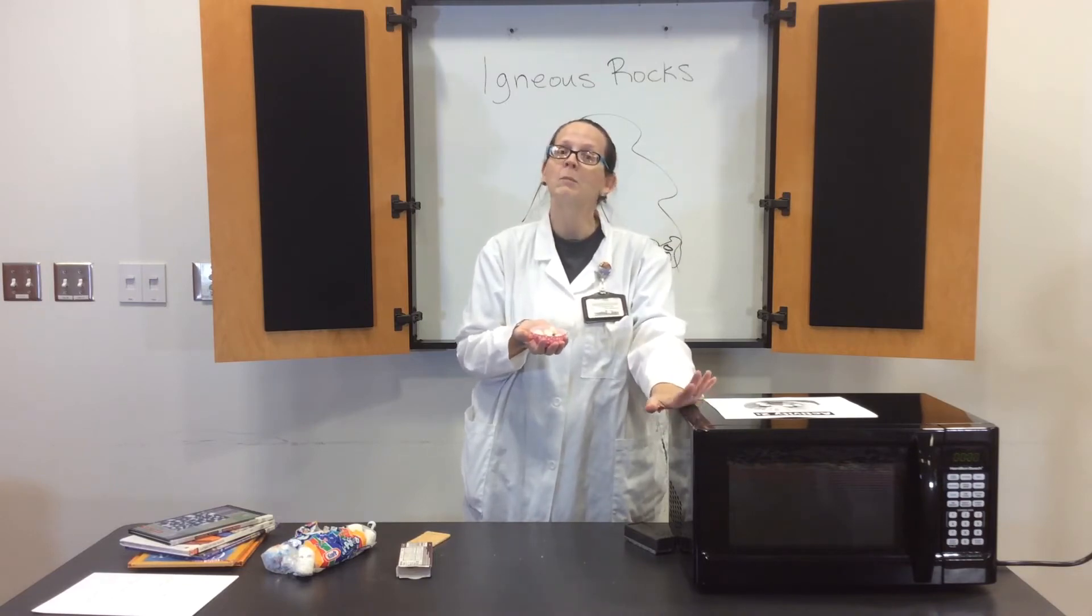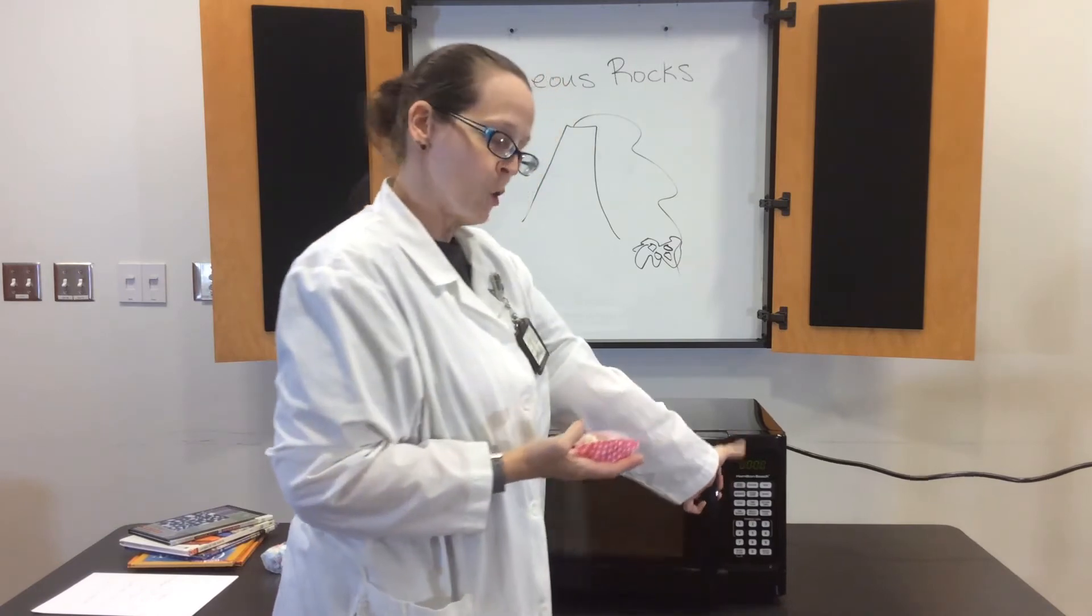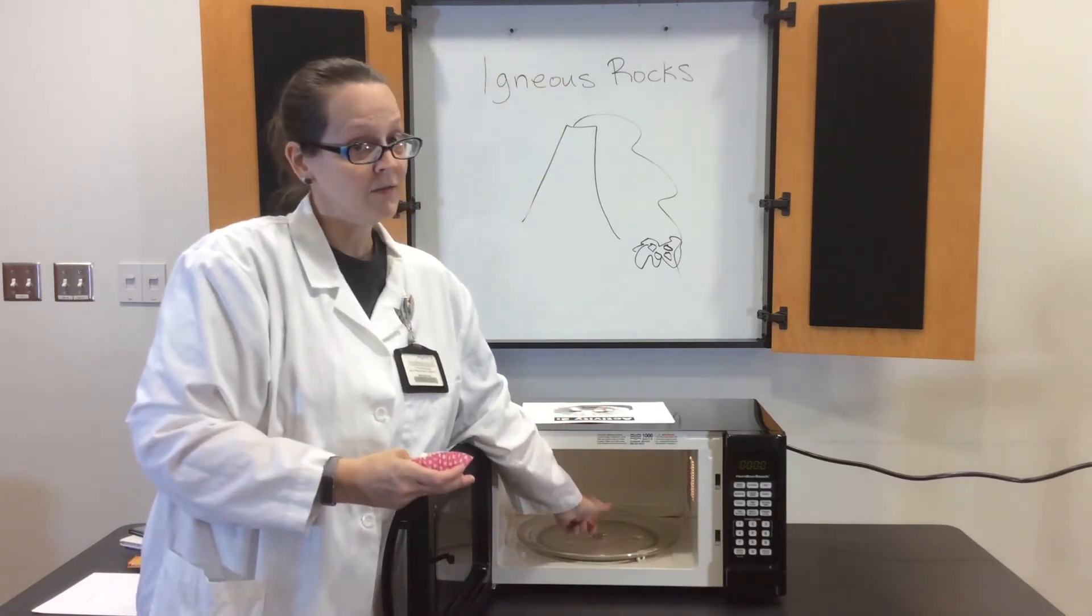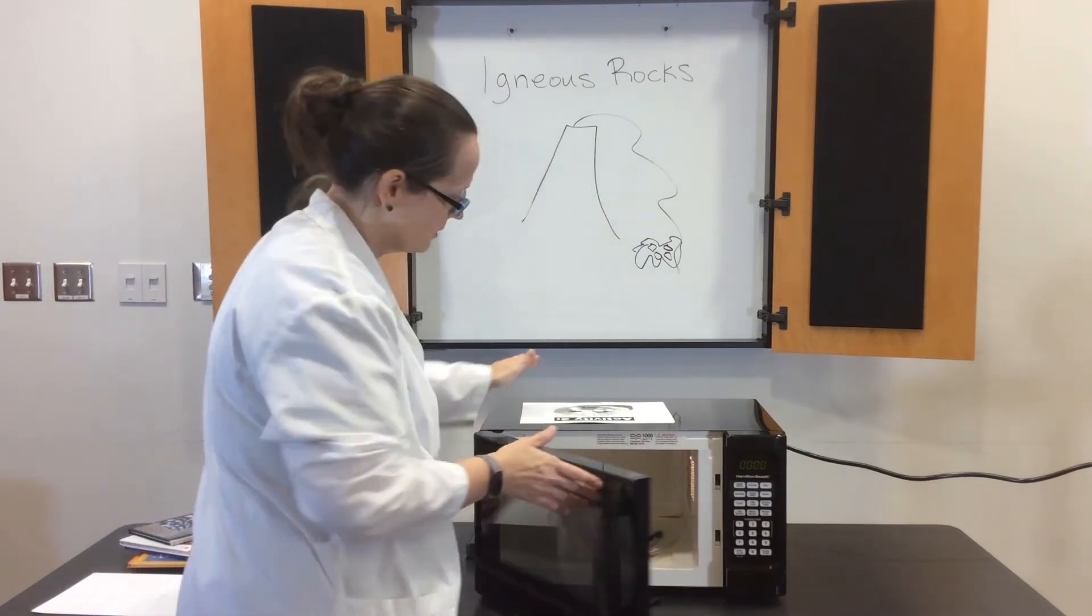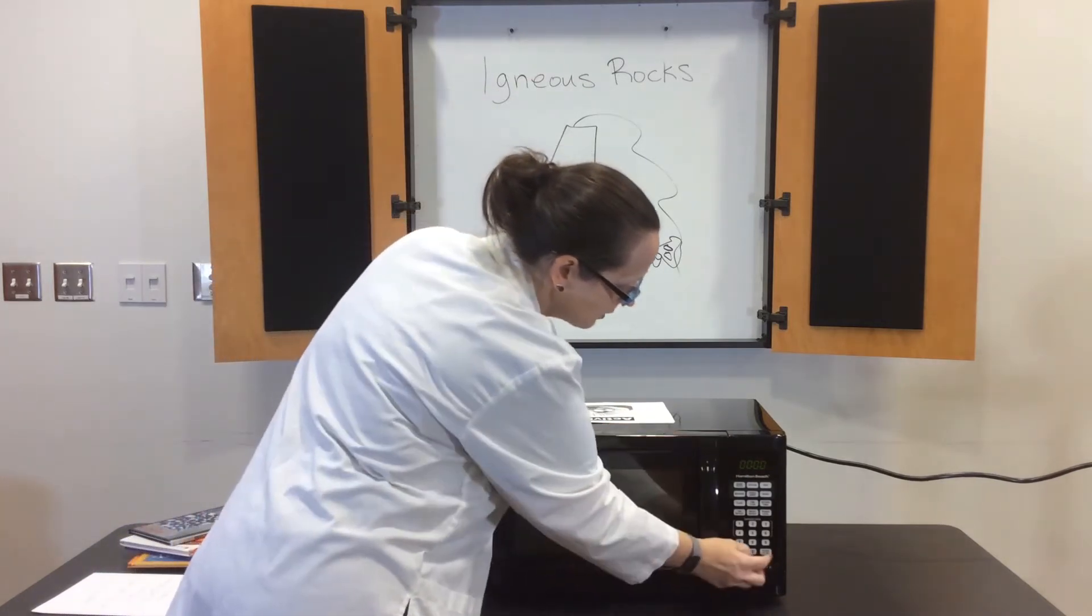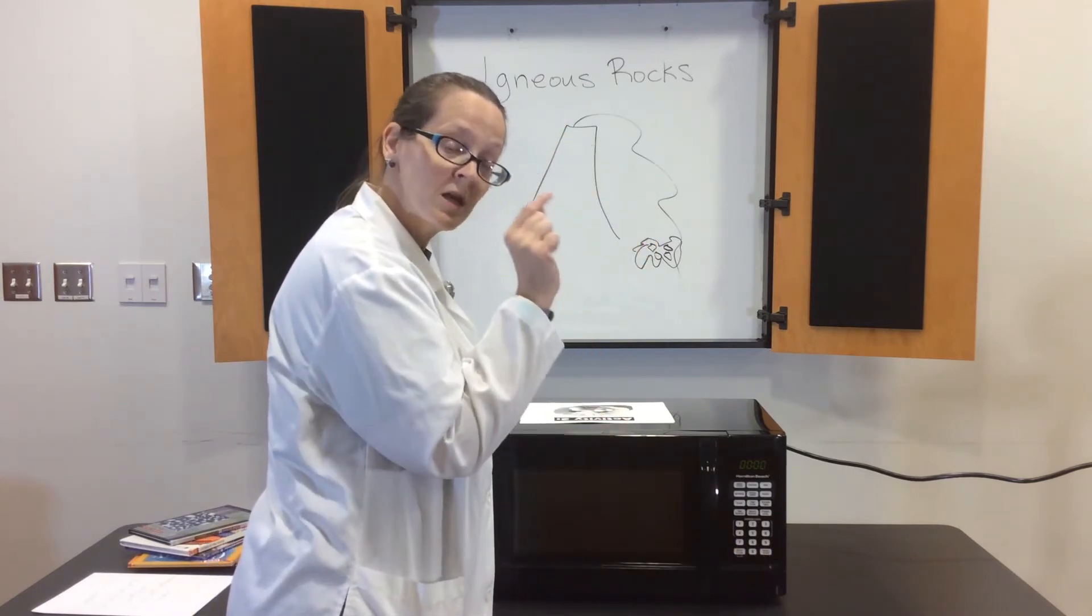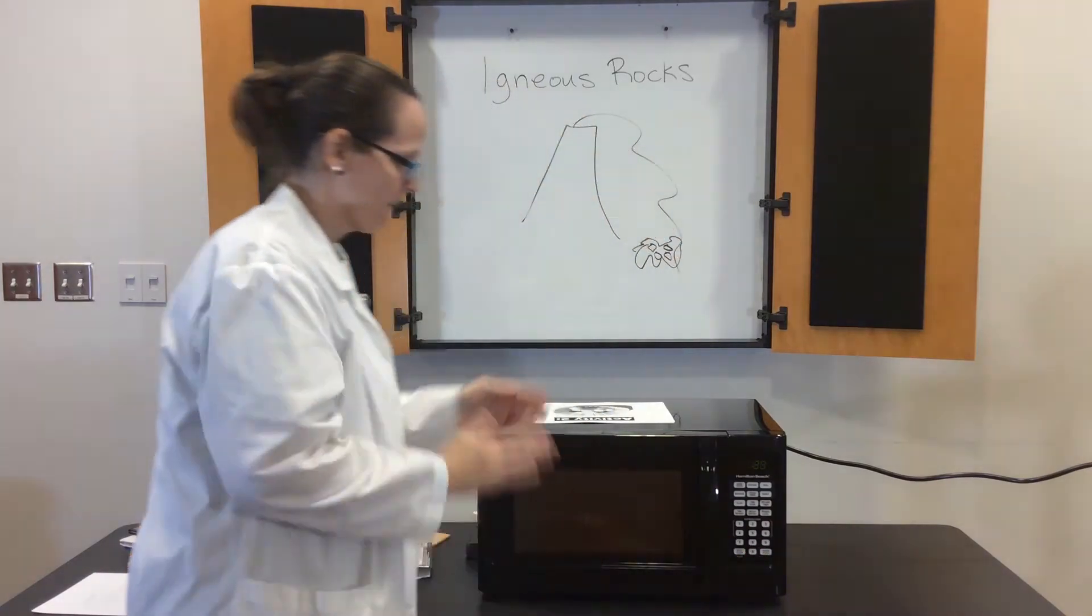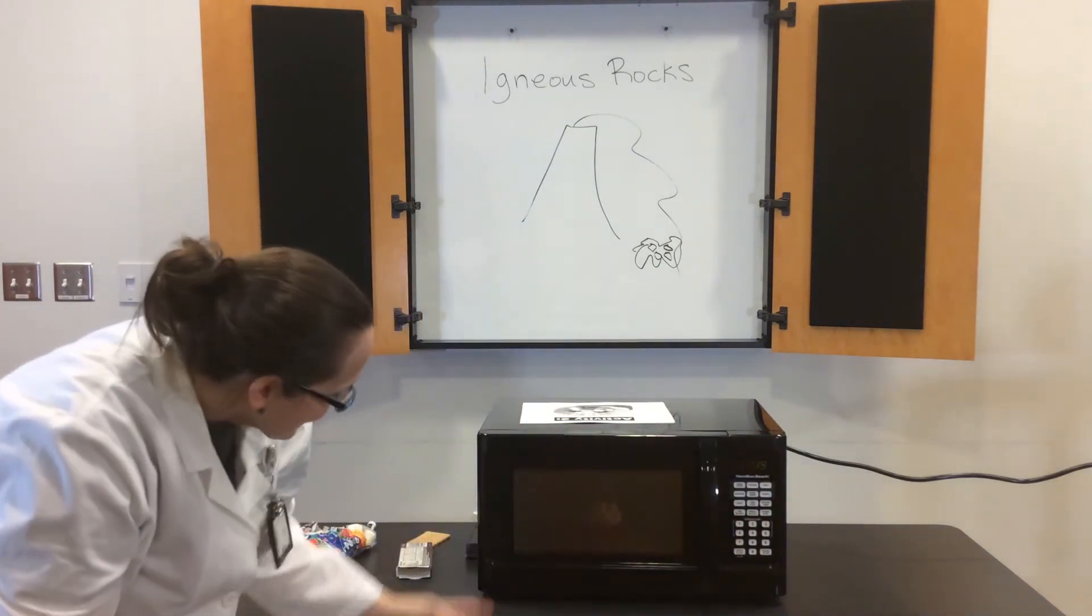So once you have everything in your cupcake holder, you're going to go to your kitchen and find your microwave. You're just going to open up the door, stick your cup in—you want to put it right in the middle of the plate so it has nice even coverage—and then you just shut your door. You can do the 30-second setting, or if you don't have that setting, just punch in three-zero and then hit start.